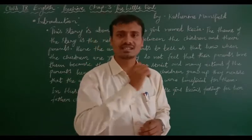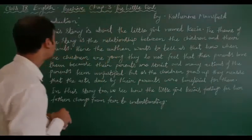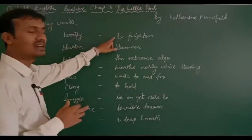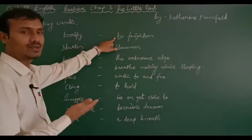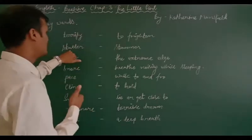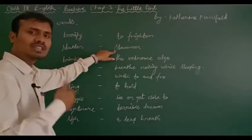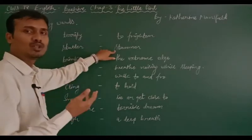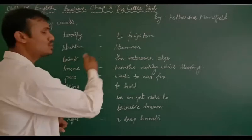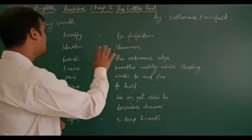Let's discuss some of the selected keywords of this chapter. The first word is terrify — to frighten, to scare someone. The next word is stutter, which means stammer. When you are not able to speak out your words clearly, you are stammering. Stammer means haklana — thik se na bol paana.